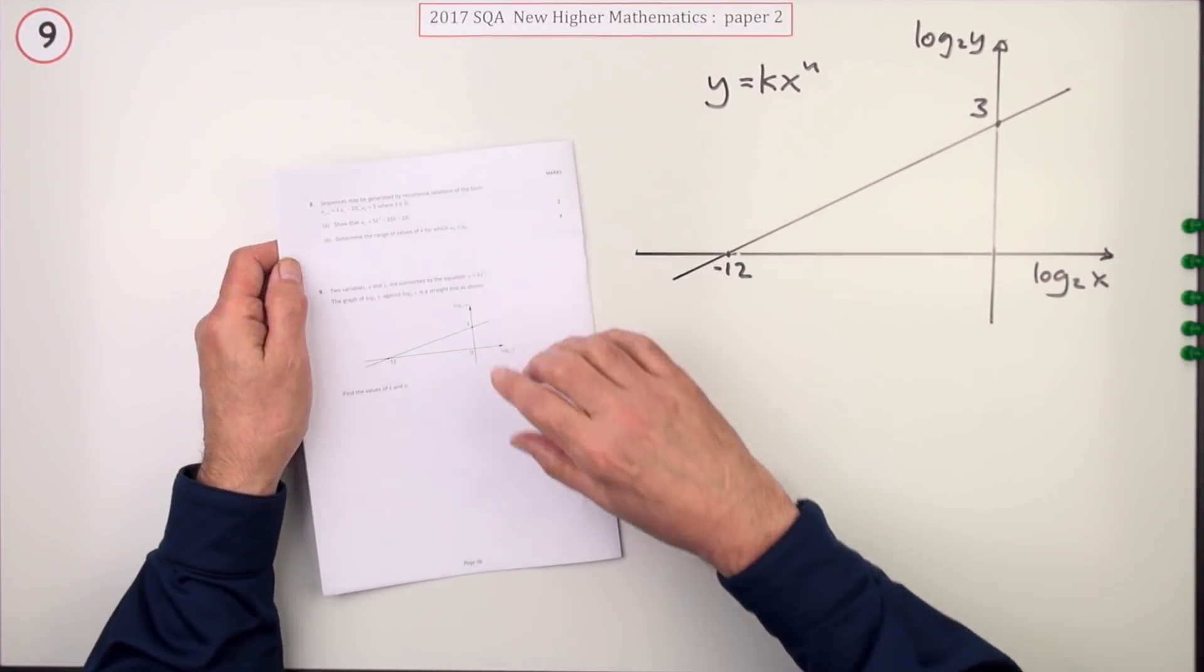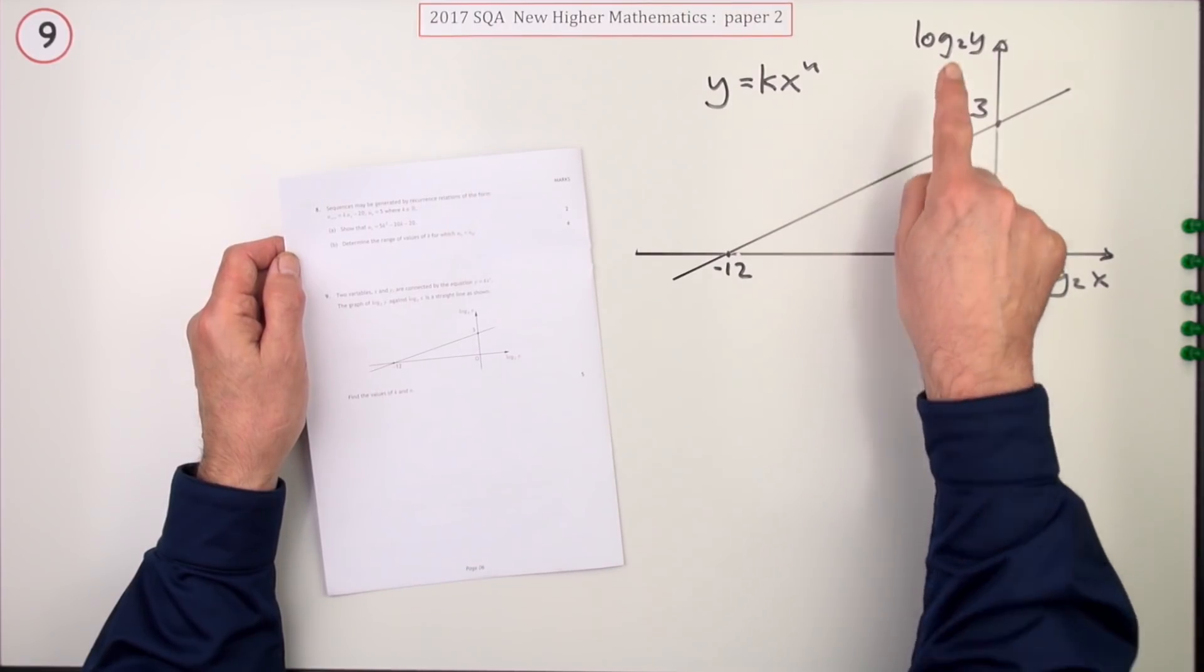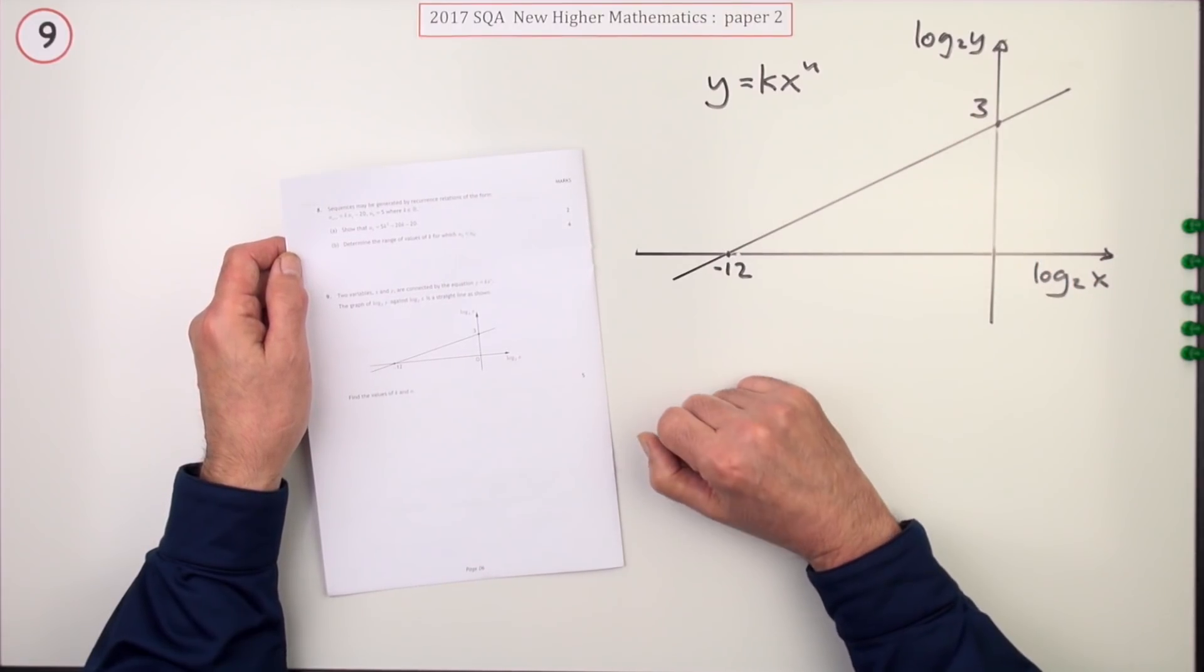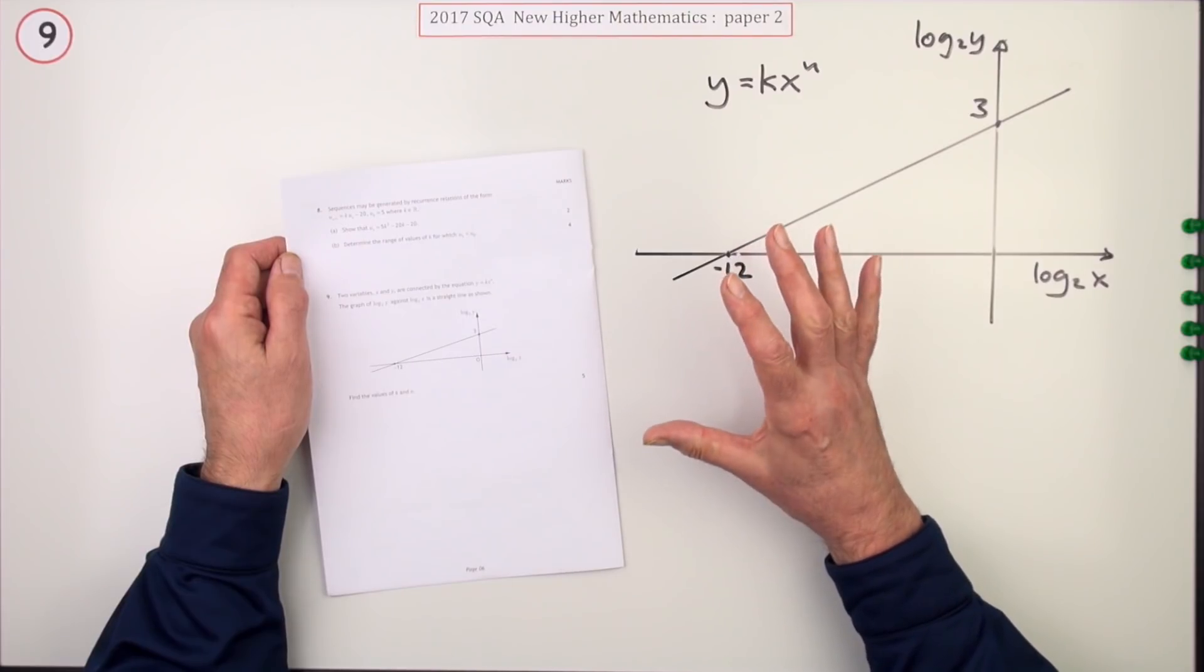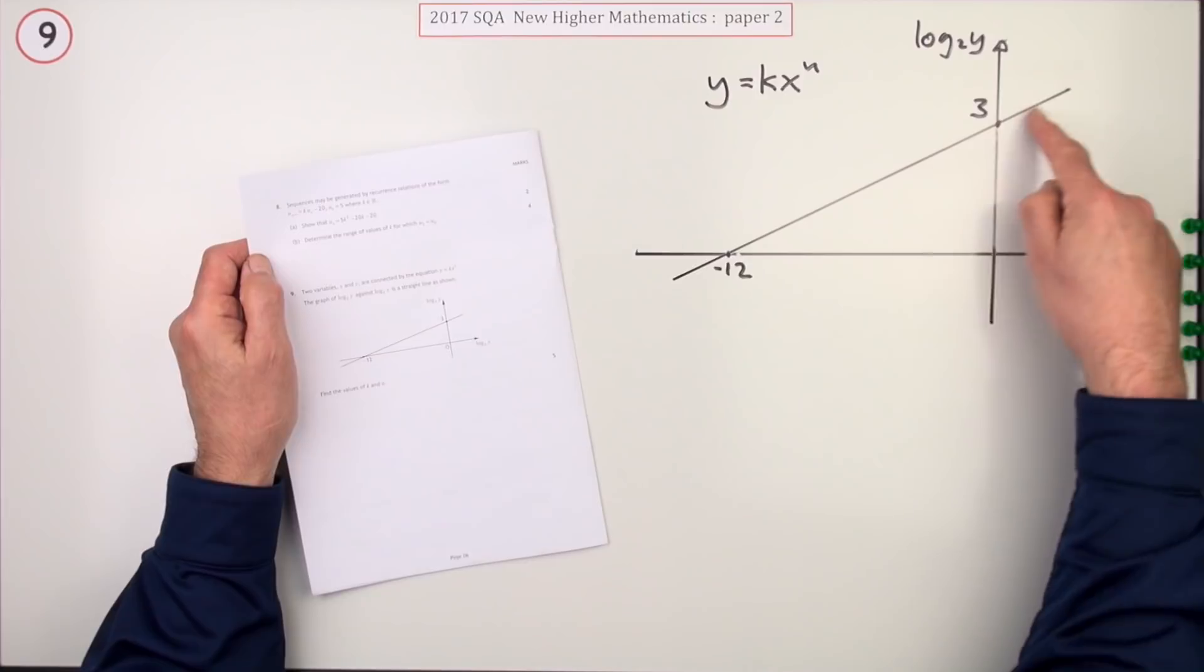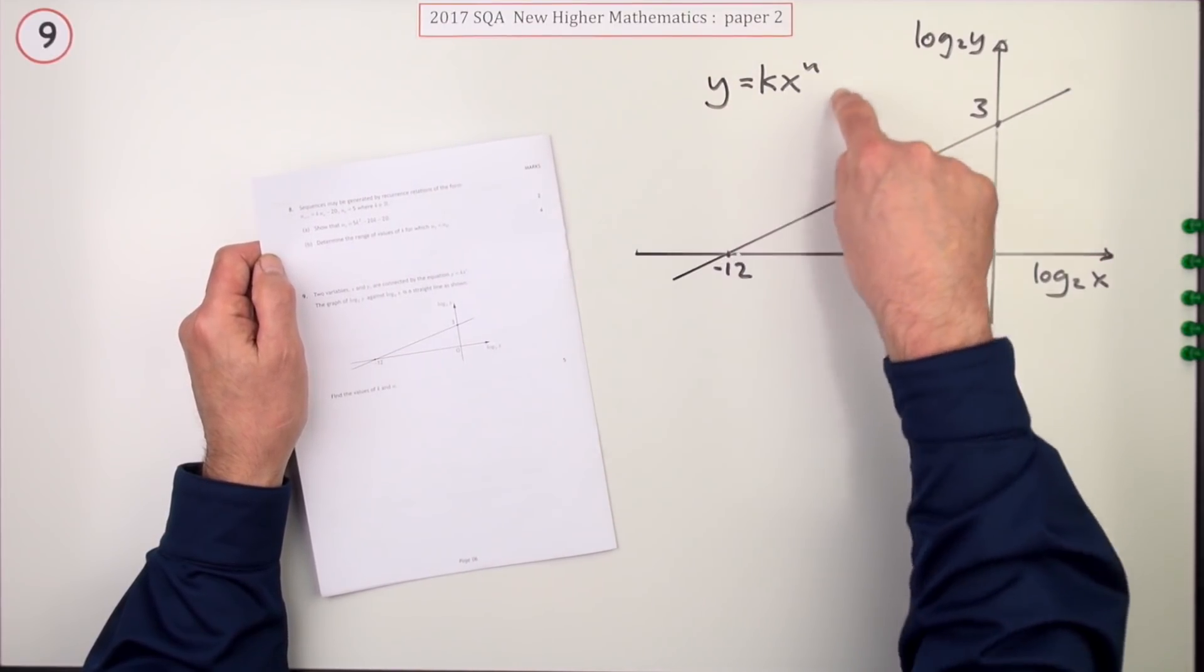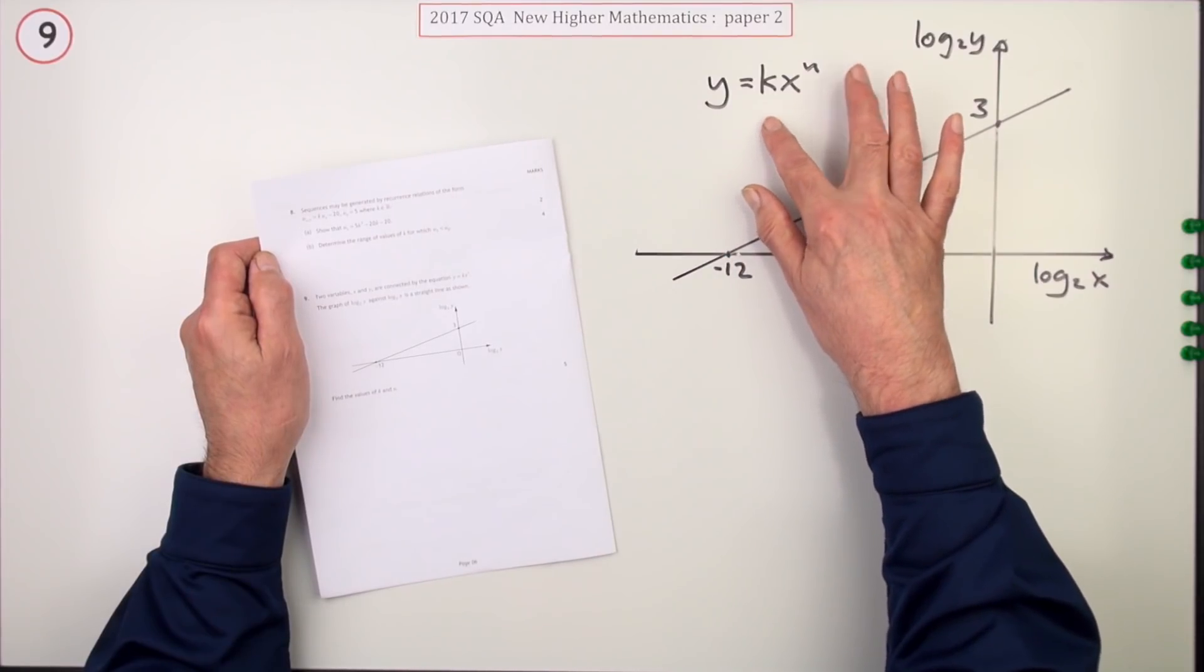Number nine from paper two of the 2017 New Higher Maths. Here we go, it's this graph of the logarithms question, also known as the experimental data question, for five marks. You're given this information in the graph and you're told that this is the form, the original form of the equation. You have to find the values of k and n.